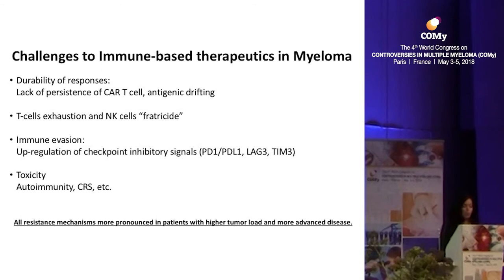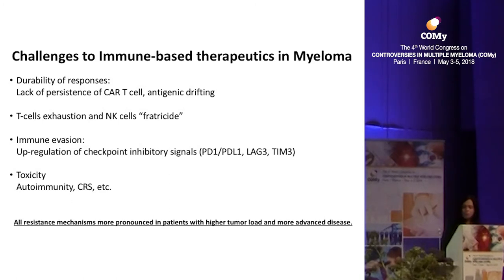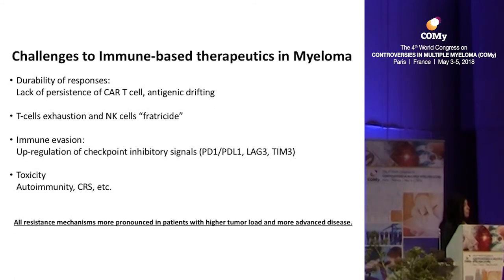We have to improve immunotherapy from this perspective. The concept of T-cell exhaustion must be considered. Daratumumab can kill some NK cells, which are important to keep alive for their cytotoxic profile. We have to consider immune evasion — the upregulation of checkpoint inhibitor ligands on myeloma cells — and toxicities such as cytokine release syndrome. Importantly, all these trials were designed in relapsed/refractory myeloma, where resistance mechanisms are highest, suggesting earlier intervention may be more successful.